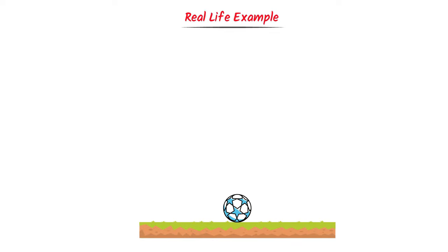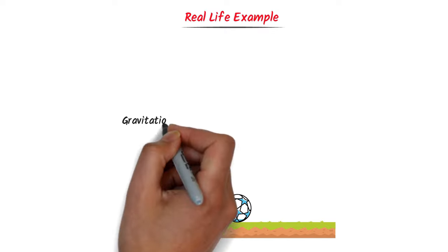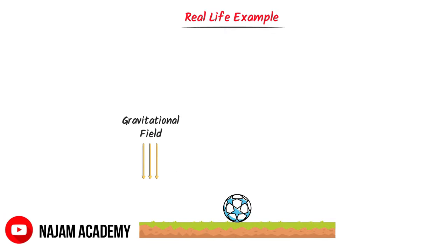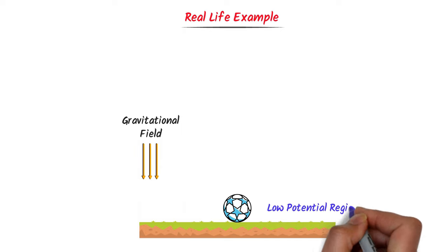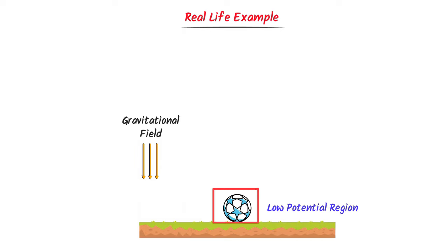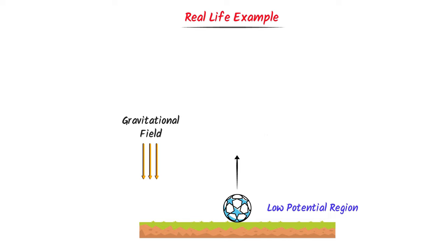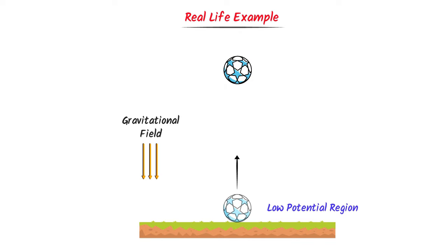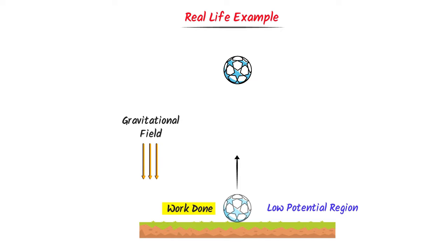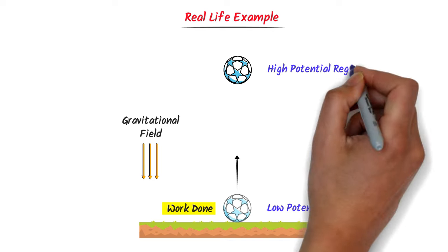Consider a ball present on the ground. We all know that this ball is present in the gravitational field and the direction of gravitational field is downward. As a convention, the ground level is considered a low potential region, so the ball is present at a low potential region. Now, how can you move this ball up to point X? Well, you exert some sort of force on this ball and displace it upward against the gravitational field. Thus the ball is now above and we say it is present at a high potential region.